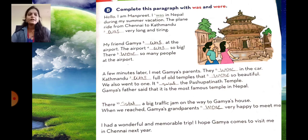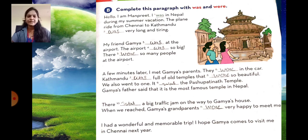A few minutes later, I met Gamae's parents. They were in the car. Kathmandu was full of old temples that were so beautiful. We also went to one — it was the Pashupatinath temple. Gamae's father said that it is the most famous temple in Nepal. There was a big traffic jam on the way to Gamae's house. Gamae's grandparents were very happy to meet me. I had a wonderful and memorable trip. I hope Gamae comes to visit me in Chennai next year.